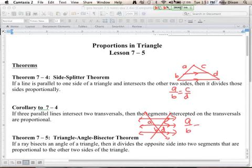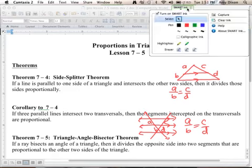So A is to B as C is to D. So you have to have two transversals cutting through parallel lines, and that relationship exists. We will do some examples using both of these in a little bit.